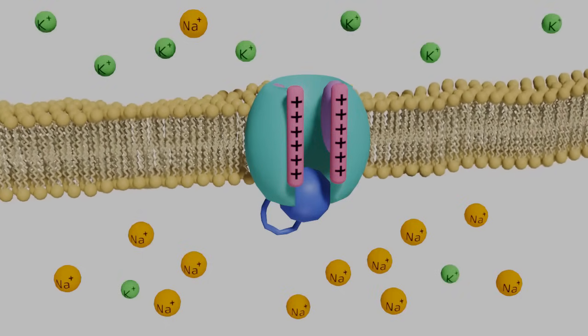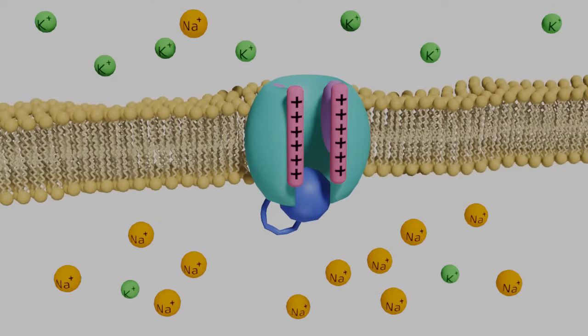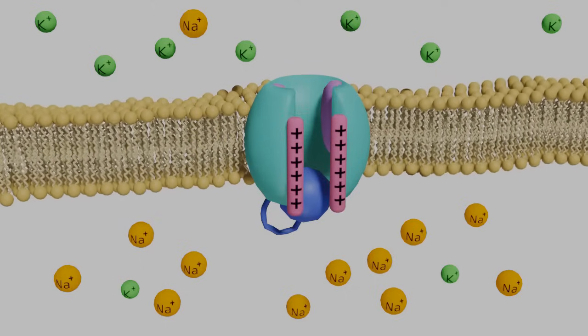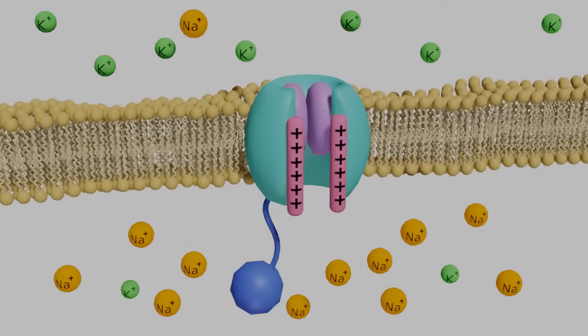Once the voltage is low enough, this causes the voltage sensors to snap back, which closes the voltage gate and opens the inactivation gate.